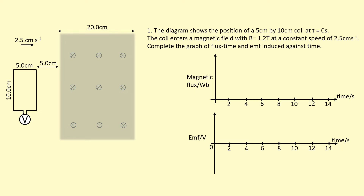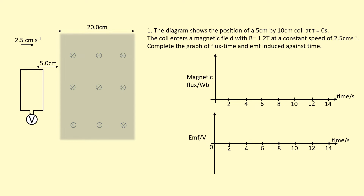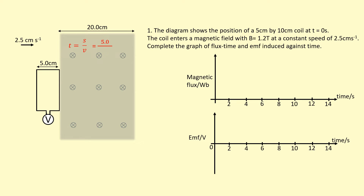We've got an overhead view of the same setup except we've got some numbers now, and I'm going to plot some graphs. The diagram shows the position of a 5 cm by 10 cm coil at time t equals zero. The coil enters the magnetic field with a flux density of 1.2 teslas at a constant speed of 2.5 centimetres per second. It has to travel 5 centimetres before it even starts to enter the field.